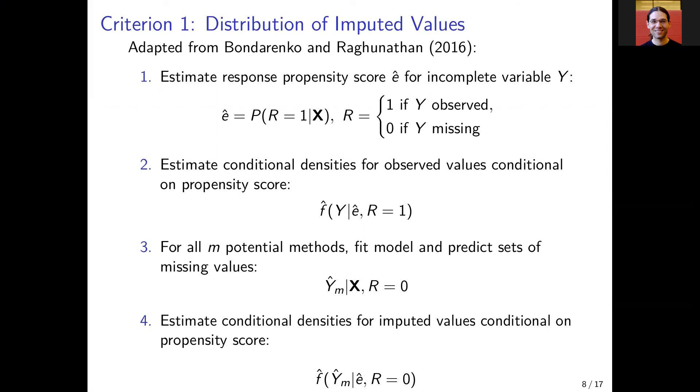So first, we estimate the response propensity score ê, which is just a probability of observing the incomplete variable Y. R here is the response indicator, which is 1 if Y is observed and 0 if Y is missing.